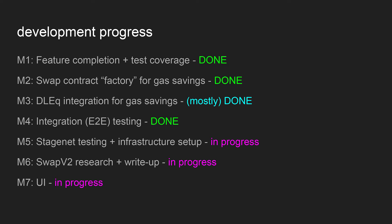Milestone three is mostly done in the codebase but uses a Rust library on the backend to do the proofs — I wanted a Go implementation as well so there are no funny language bindings. Milestone four is integration testing: automated tests that run two nodes and go through all the success and refund paths — that's done. Milestone five is stage net testing: deploying nodes on remote servers and running automated swaps for a long period to make sure everything is good. Milestone six is research for swap v2 — an improved protocol with improved privacy and more features like token integration.